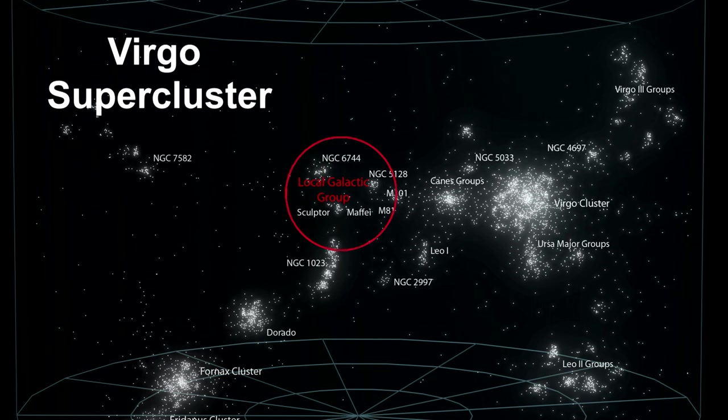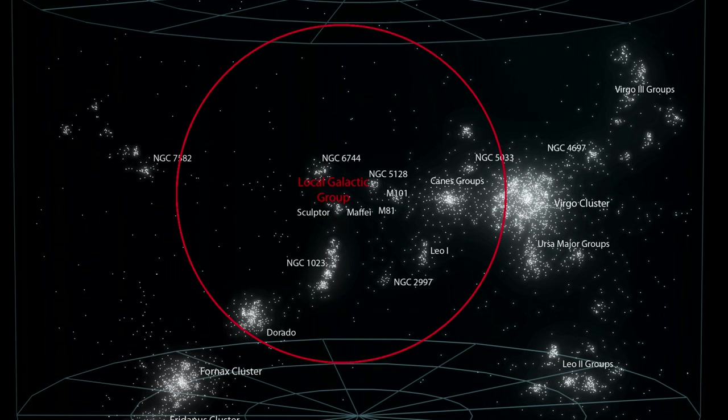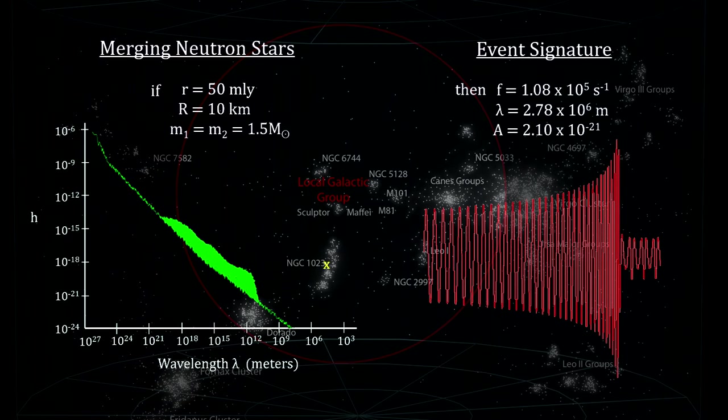To get a higher rate we have to move outside of the galaxy into the Virgo supercluster our local supercluster that we covered in How Far Away Is It? video book. Within a 50 million light year radius we expect to have as many as 10 or more neutron star mergers per year because we're including thousands of galaxies. Unfortunately at this extended distance the amplitude drops to the 10 to the minus 21 range.